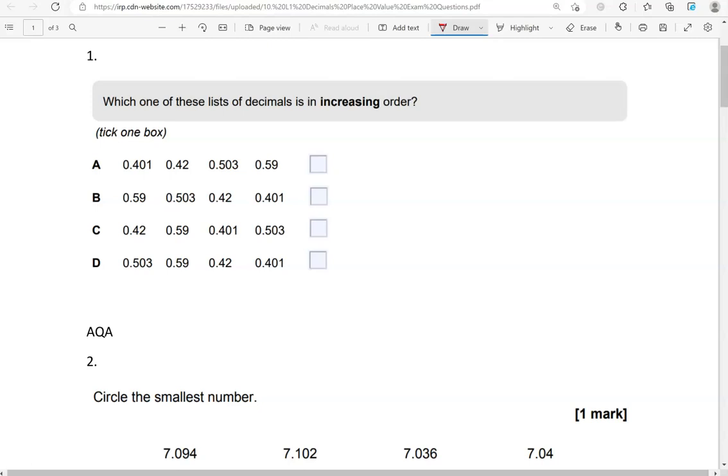They all start with zero, which means we've got to focus on the first digit after the decimal point. So we've got 4, 4, 5, 5.